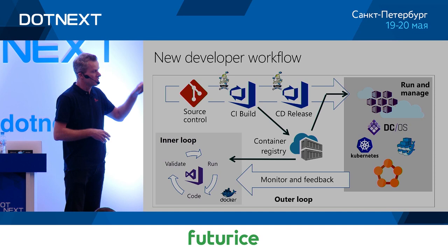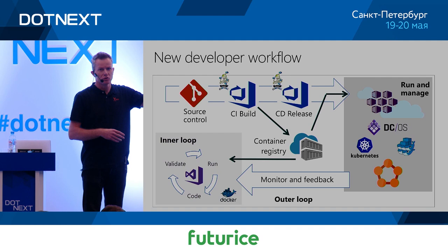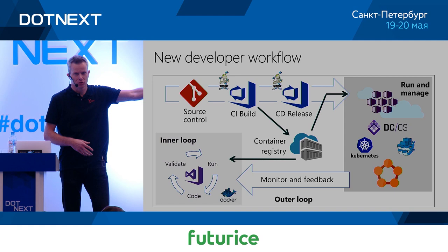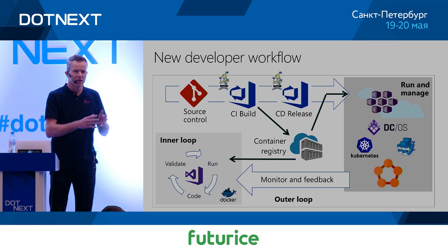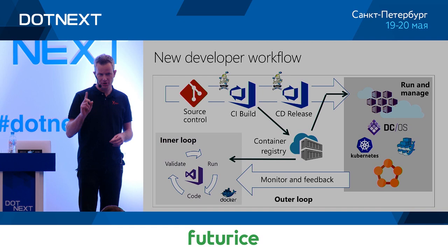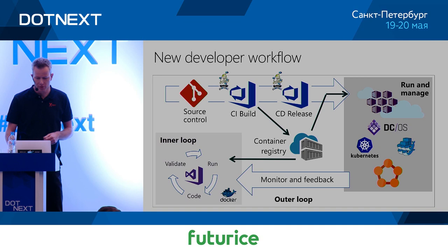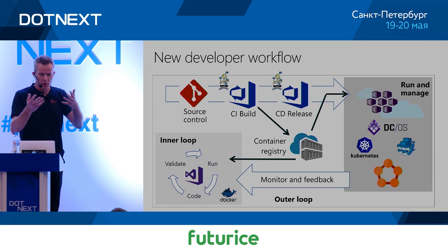The build pipelines produce container images. Container images capture everything about your application and sit at a registry waiting to be consumed by your production environments. The production environments — clusters, meshes, or fabrics of machines — host your running containers. If you're not familiar with containers yet, think of them as really tiny virtual machines for now. Running in production, you get feedback, reported bugs, and continue in your inner loop again.